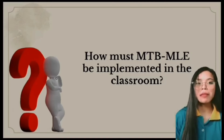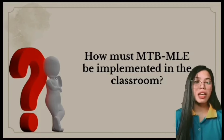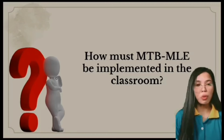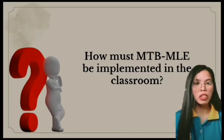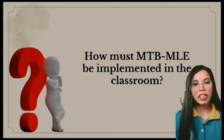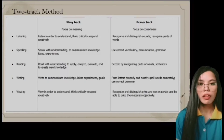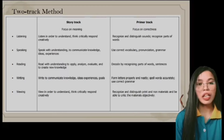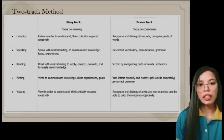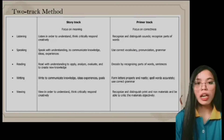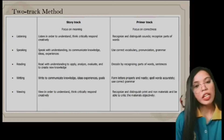For the effective implementation of MTB-MLE, it is suggested that the two-track method be used: the primary track focuses on accuracy and the story track focuses on meaning. Learning via the two-track method develops proficiency in literacy, comprehension of academic content, curriculum mastery, and critical thinking skills. In the listening story track, students listen in order to understand, think critically, and respond creatively. In the primary track, students recognize and distinguish sounds and recognize parts of words. In the speaking story track, students speak with understanding to communicate knowledge, ideas, and experiences.